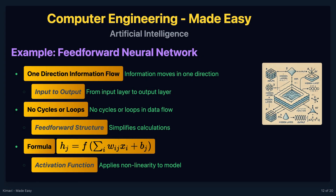In a feedforward neural network, information flows in one direction — from the input nodes, through the hidden nodes, to the output nodes. There are no loops or cycles. The output of a neuron in a hidden layer can be described by the formula: H sub j equals F of the sum from i of W sub ij times x sub i plus b sub j.